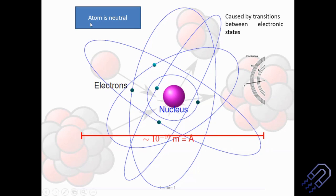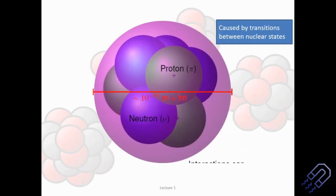In general, we know the atom is neutral. We have transitions between electronic states, and here we are having transitions between the nuclear states — we are going to look into these things as we advance in the syllabus. So in general, we said it is just a proton or a neutron, with a diameter of 10 to the power minus 15 meters. But we know that it is not that simple.